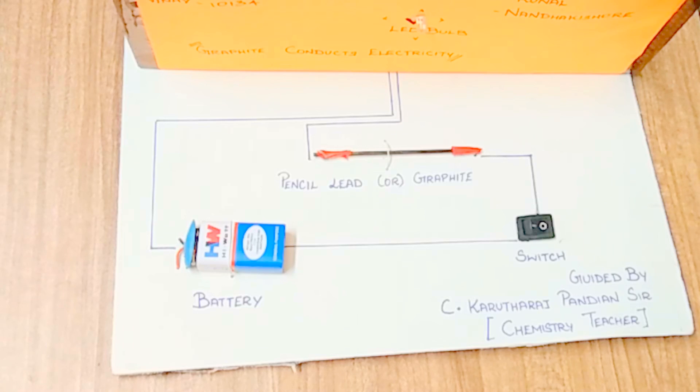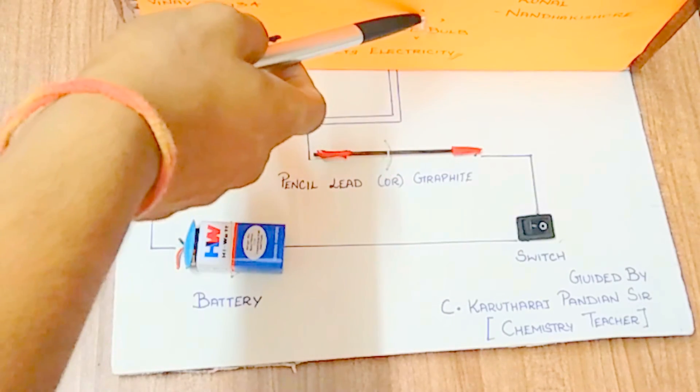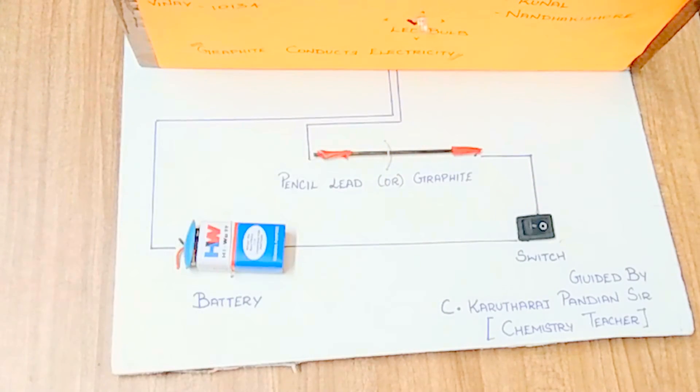Now the components we will be seeing for this circuit are battery, switch, graphite or pencil lead, and LED bulb.